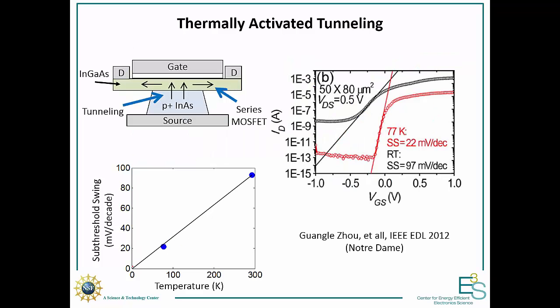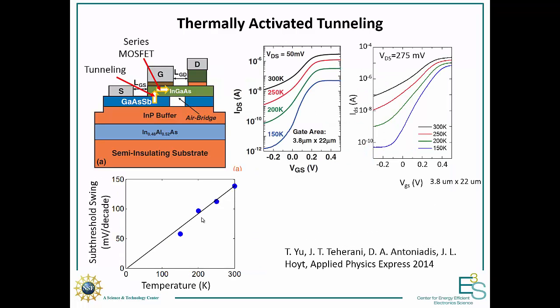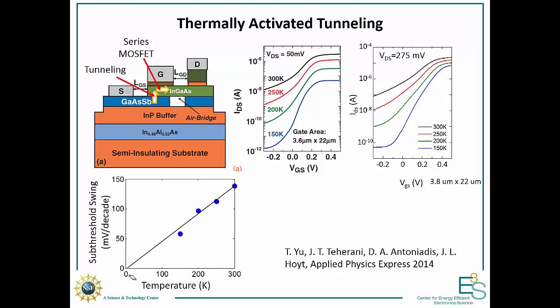Here's another example where again you can see the device is getting much steeper with temperature, and the swing is proportional to temperature. Same with this device — it extrapolates back down to zero, showing that there is a very strong thermal dependence.